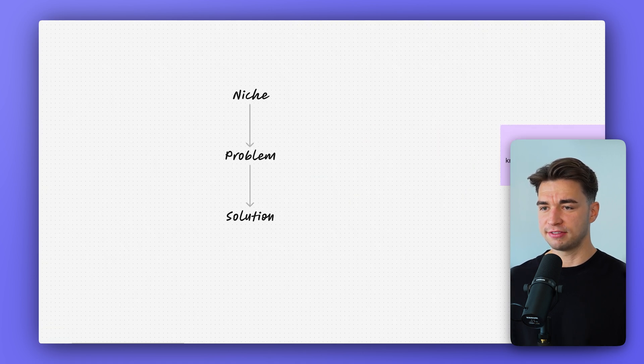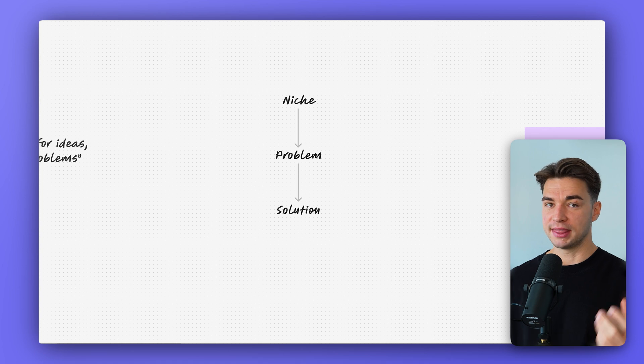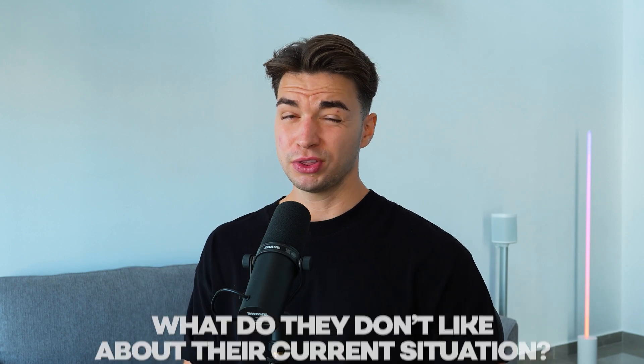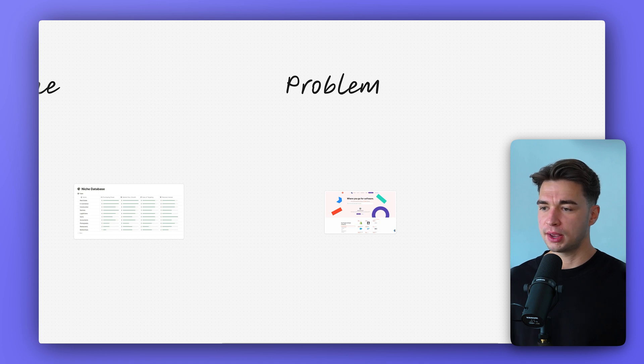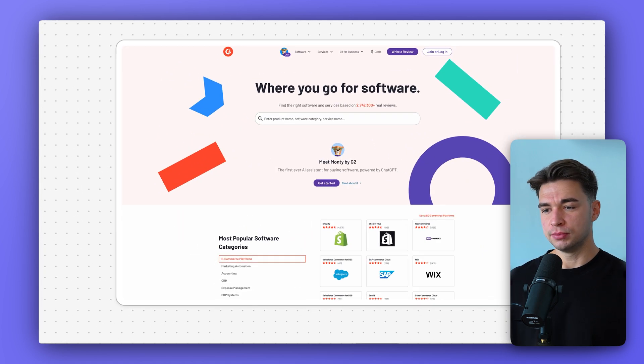Once you've identified your niche, the next step is to identify a clear problem in that niche — something you can solve. Don't think about what could be a cool idea; first identify a problem, then come up with a solution. Do your research on Google, watch YouTube videos, really get to know the niche: how are they thinking, what does their day-to-day look like, what don't they like about their current situation? A great tool for this is software review sites like G2, one of the biggest.